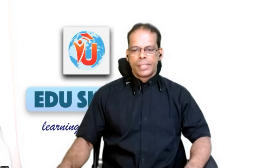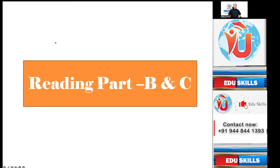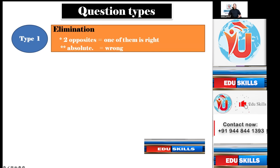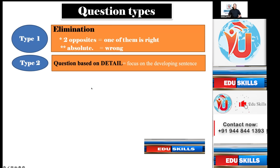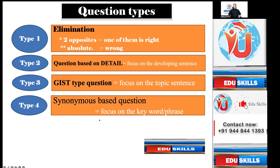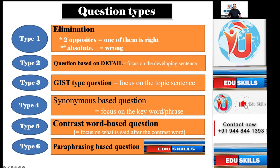Today we cover the reading sub-test and various types of questions. Reading Part B and C will cover different types of questions, but the strategies are almost 95% the same. Type 1 is elimination — two opposites, one of them is right, and the absolute wrong options are removed. Type 2 is detail-based, focusing on the developing sentence. Type 3 focuses on the topic sentence. Type 4 is synonymous-based, focusing on the keyword or phrase. Type 5 is contrast-word based, focusing on what is said after the contrast word. Type 6 is paraphrasing-based.